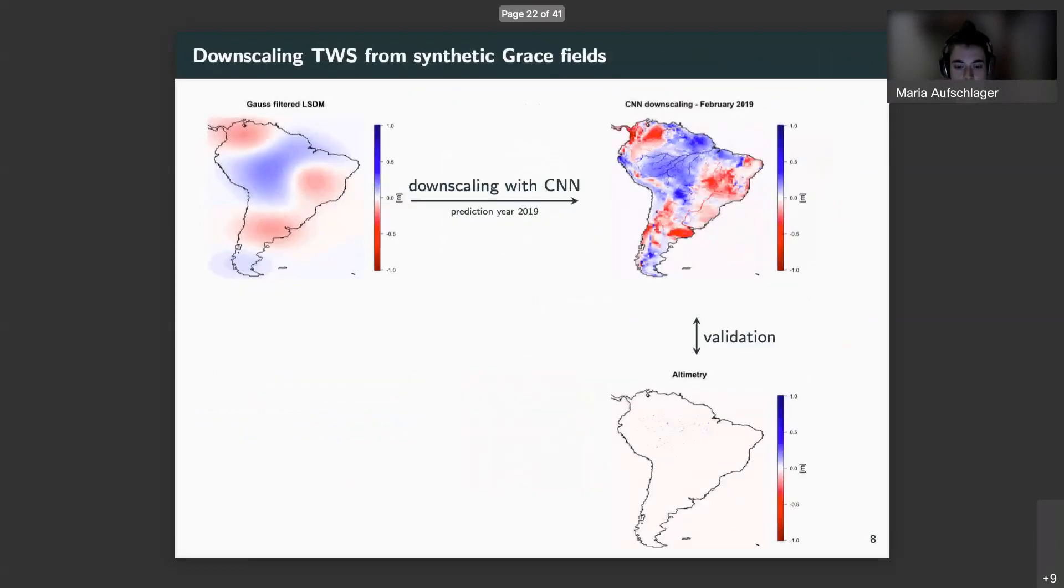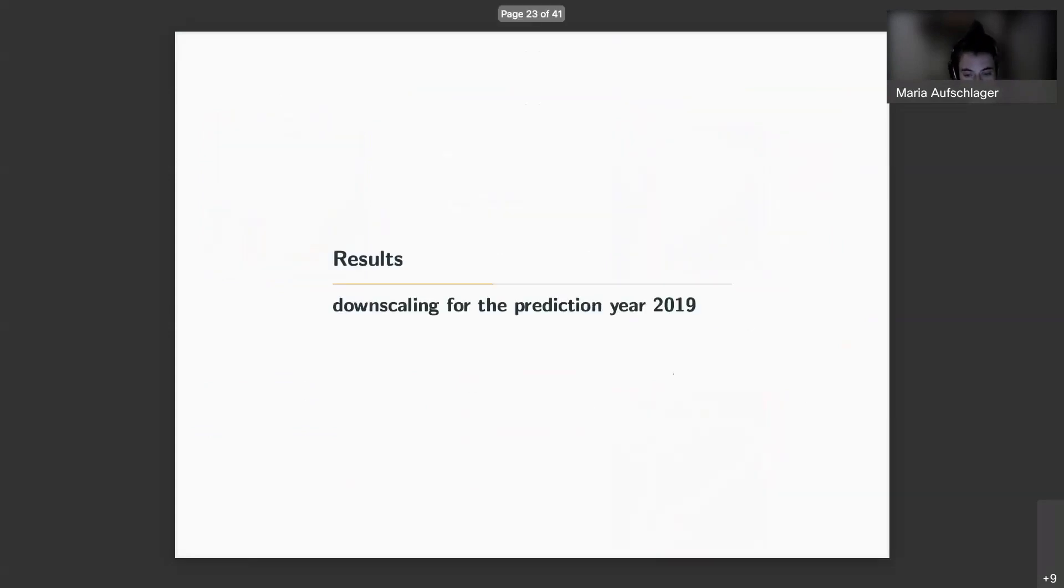With this neural network, unseen data for the year 2019 are downscaled, and altimetry records are again used as an independent measure to quantify the performance of the neural network. So, let's inspect the actual results of the downscaling.